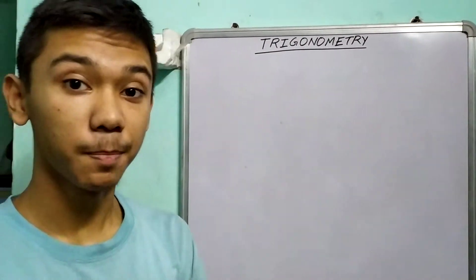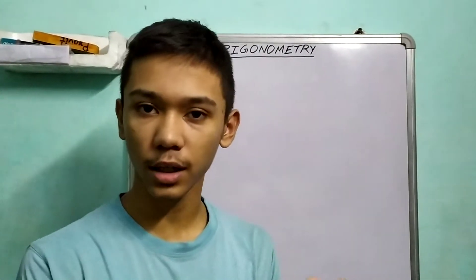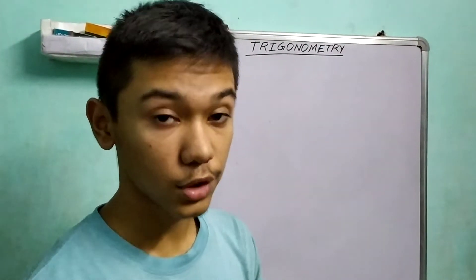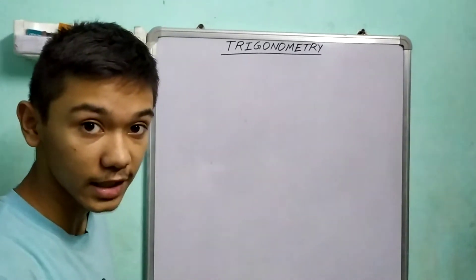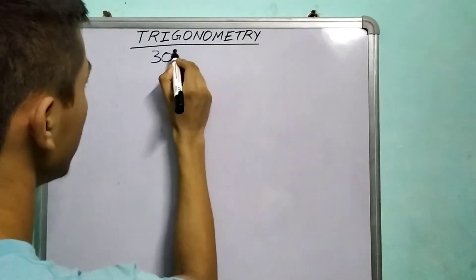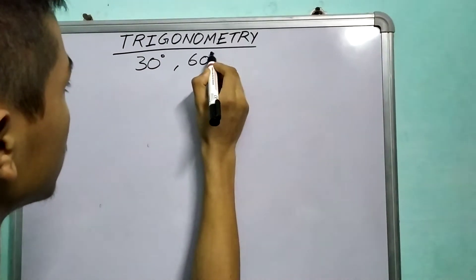Hi everyone, so in the previous video we saw how to derive values of trigonometric ratios for 45 degrees. Now in this video we will see the derivation of trigonometric ratios for two angles which are 30 degrees and 60 degrees.